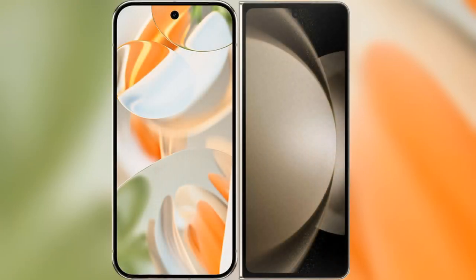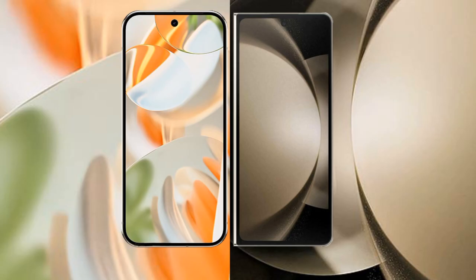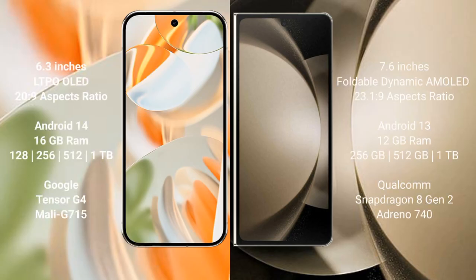We will compare the new Google Pixel 9 Pro with Samsung Galaxy Z Fold 5. Google Pixel 9 Pro has a 6.3-inch LTPO LED display and Saksa Peso 26.9. Samsung Galaxy Z Fold 5 has a 7.6-inch foldable dynamic AMOLED display and Saksa Peso 23.1.